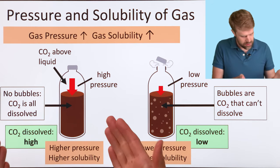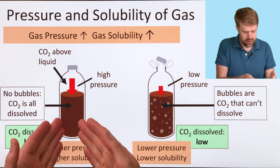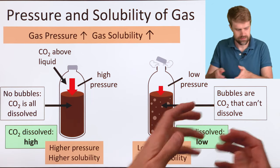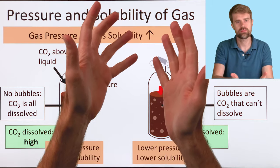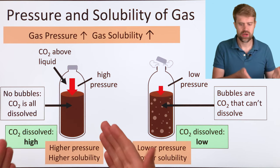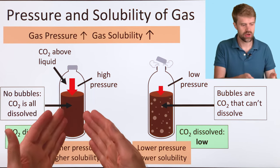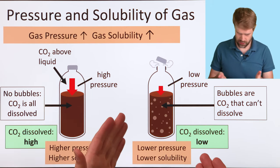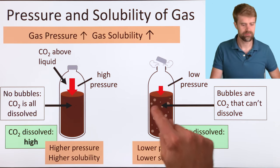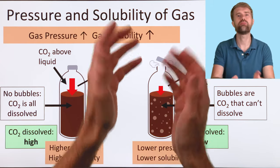We didn't see bubbles when the bottle was at high pressure because the carbon dioxide was all dissolved. But here, a lot of carbon dioxide can't dissolve anymore, so it bubbles out. So, the higher the pressure of the gas above the liquid, the higher the solubility of the gas dissolved in the liquid. The lower the gas pressure above the liquid, the lower solubility of the gas. And the gas that can no longer dissolve, it bubbles out.